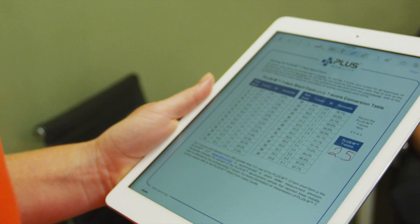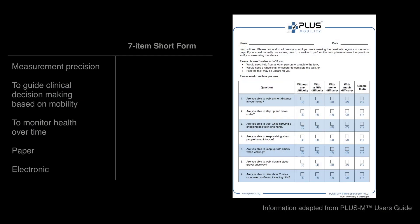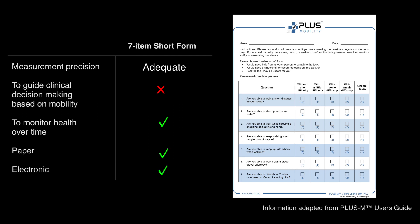The 7-item short form provides adequate measurement precision and is best suited in situations where mobility is a secondary outcome or to monitor patient health over time. It is available in paper and electronic form.